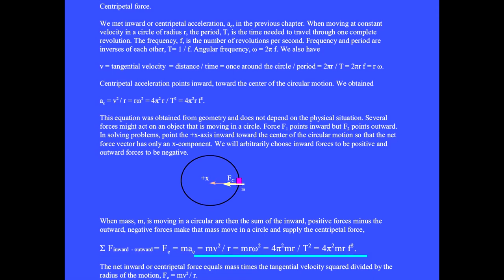We have the sum of the inward minus outward forces equals FC equals maC equals mV²/R. We keep this string of equal signs here handy, because in half of the problems we are given velocity and radius. In the second half of the problems, we are given radius and angular frequency ω. Omega must be in radians per second. In the third half of the problems, we are given the radius R and the period T. This equation means that the net inward or centripetal force equals mass times the tangential velocity squared divided by the radius of the motion.